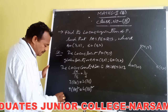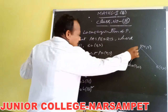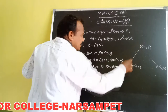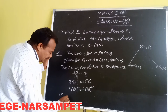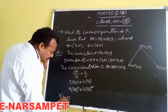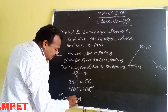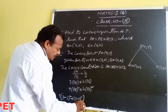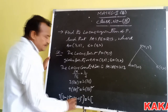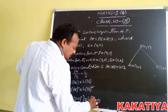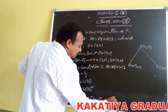PA squared means the square of the distance between P and A, given by X minus 3 whole square plus Y minus 0 whole square, is equal to 4 of PB squared, which is X minus 0 whole square plus Y minus 2 whole square.